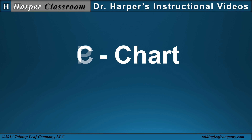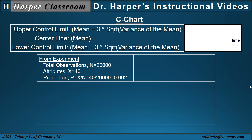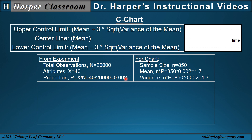Now let's look at the C-chart. From the experiment, the total number of observations capital N is 20,000, and the number of attributes X is 40. The proportion is X over N — 40 over 20,000 — which is 0.002, or 0.2%. For the chart, the sample size (small n) is 850. The mean this time is n times P — 850 times 0.002 — which is 1.7. And the variance for the C-chart is the same as the mean, which is 1.7.